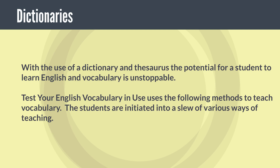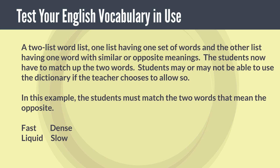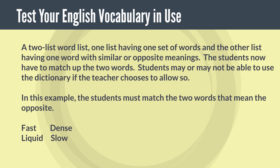Test Your English Vocabulary in Use uses various methods to teach vocabulary. One example is a two-list word list — one list having one set of words and the other having words with similar or opposite meanings — and the students have to match up the two words. Students may or may not be allowed to use the dictionary, at the teacher's discretion. For example, the students must match words that mean the opposite: fast and dense, liquid and slow — fast would match with slow and liquid would match with dense.